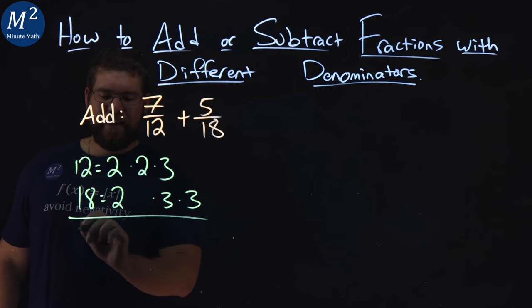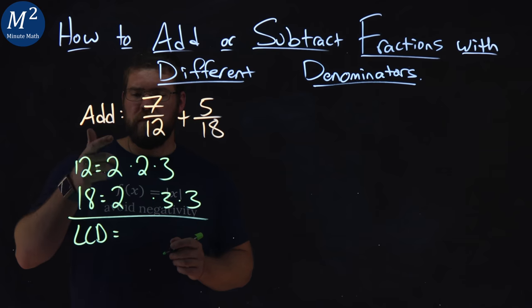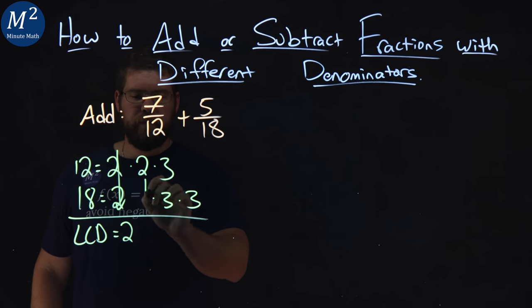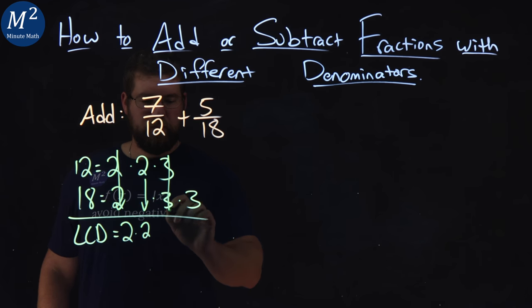From there, we now find the least common denominator. Well, line up, 2's come down, so one 2 comes down here, times this 2 comes down here. These 3's come down, and this 3 comes down.